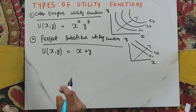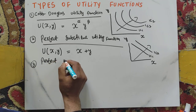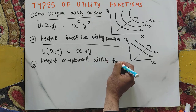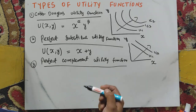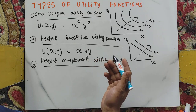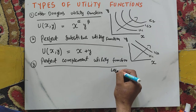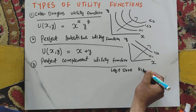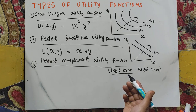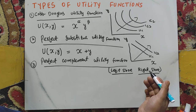The third type is the perfect complement utility function. This function describes goods that are always consumed in fixed proportions, meaning one good is useless without the other. For example, consider a pair of shoes — a left shoe and a right shoe. If we only purchase a left shoe, the utility derived is zero unless we also purchase a matching right shoe.